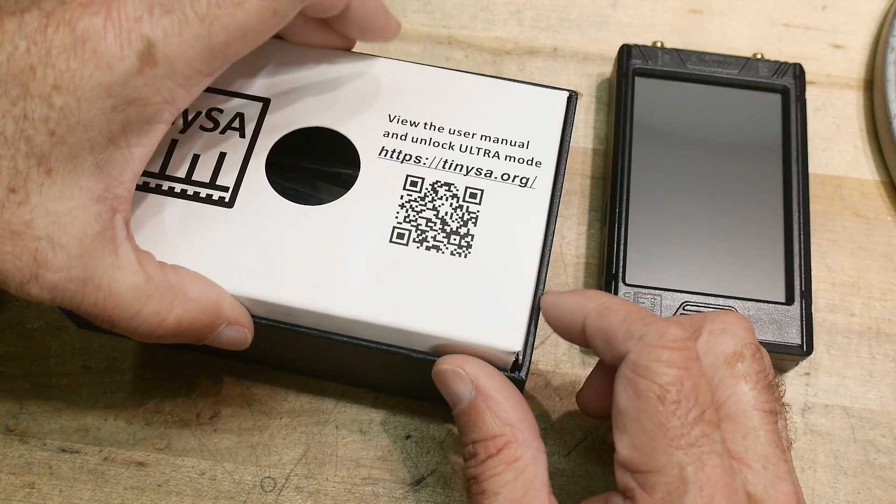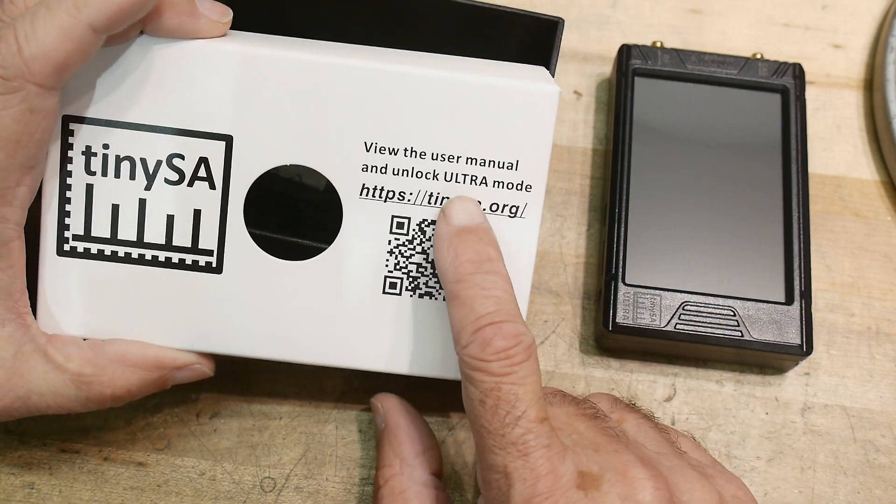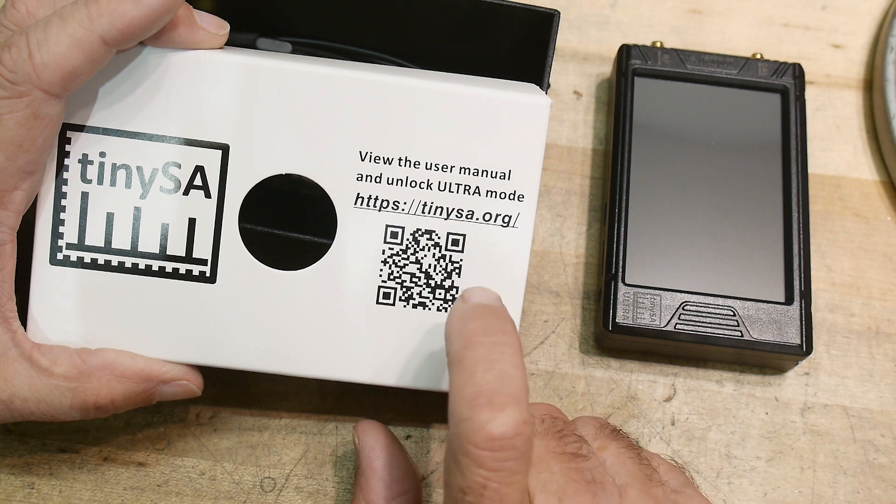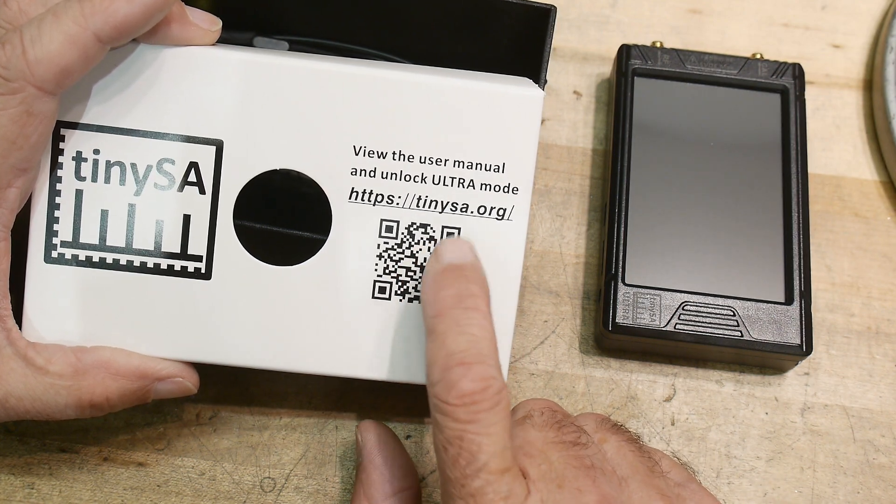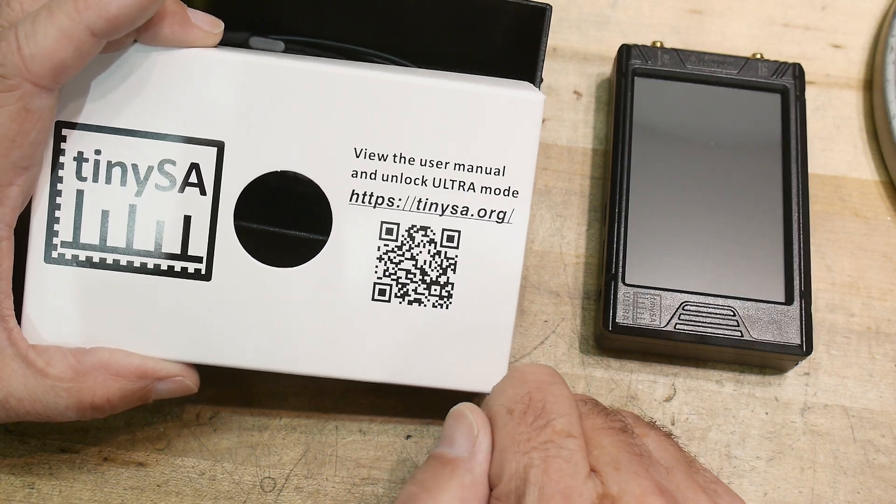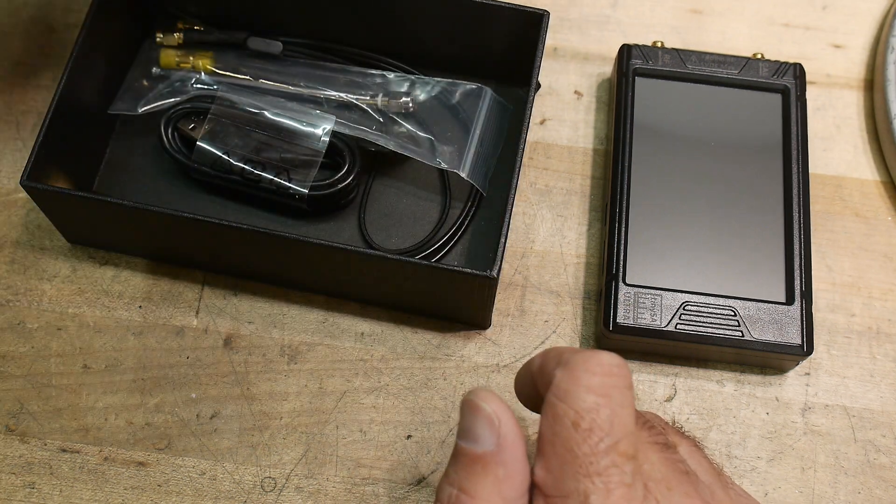Back to the box - there's a user manual and unlock ultra mode. I guess you have to type in a code to get the ultra mode. Maybe that's to stop people from hacking this thing or making clones of it.